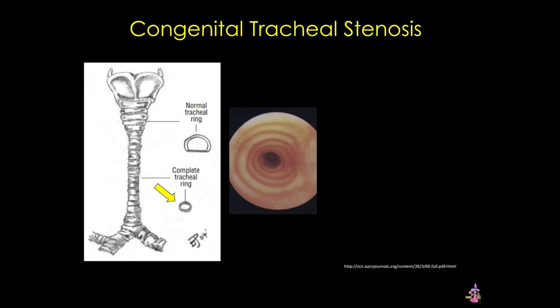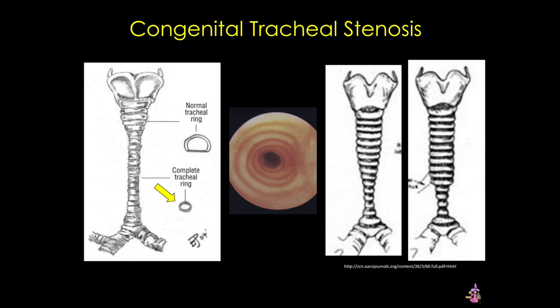The affected airway can involve a few rings, most of the trachea, and can even extend into the lung. The resulting airway stenosis leads to children presenting with cyanosis, recurring infections, wheezing, apnea, and acute respiratory distress.